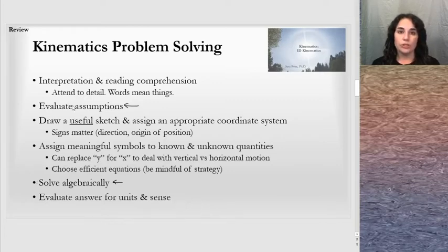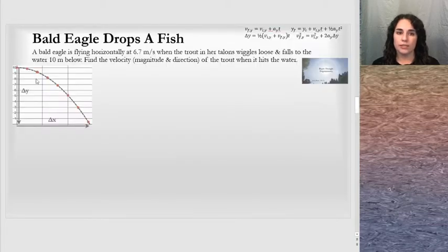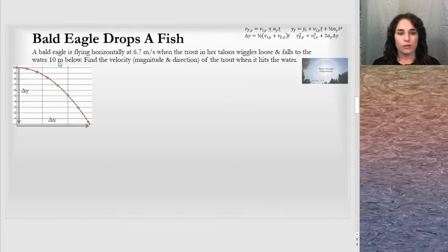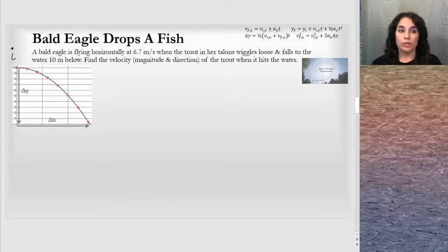The first problem applying projectile motion concepts is the bald eagle drops a fish problem. You can review right triangle trig in the primer for help finding the velocity at the end. A bald eagle is flying horizontally at 6.7 meters per second when the trout in her talons wiggles loose and falls to the water 10 meters below. I've provided a picture, and I'll mark the initial position here.